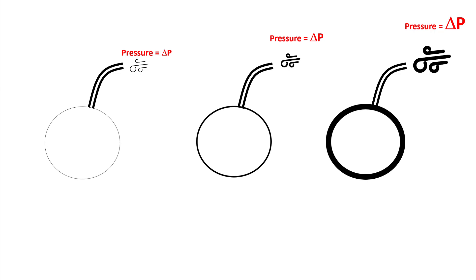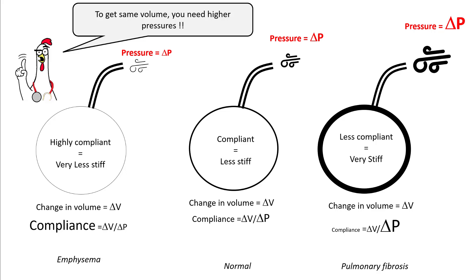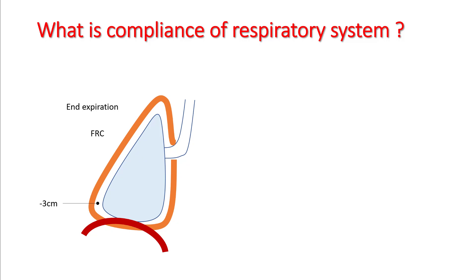If you want to generate similar volumes, you will need much higher pressure to inflate the less compliant alveoli. Poorly compliant alveoli are seen in diseases such as pulmonary fibrosis, while highly compliant alveoli are seen in diseases such as emphysema.